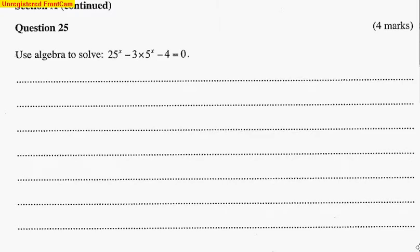Hello again, here is question 25 from the 2014 exam. It says use algebra to solve 25^x - 3×5^x - 4 = 0.